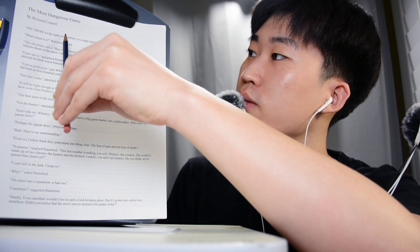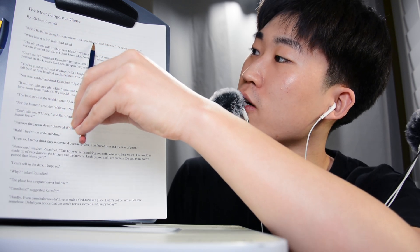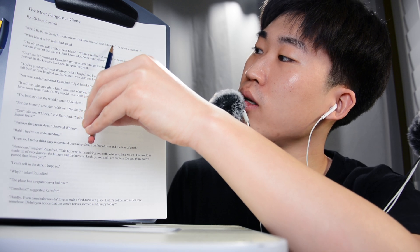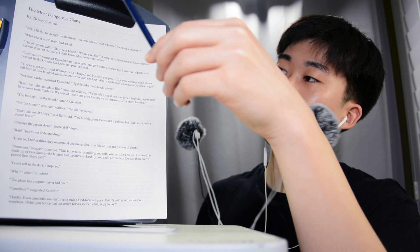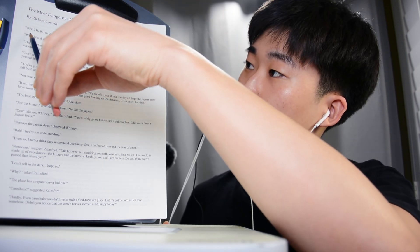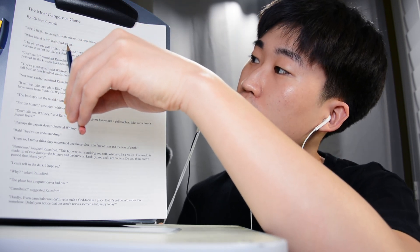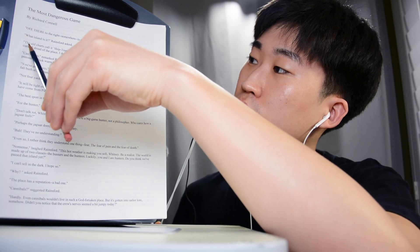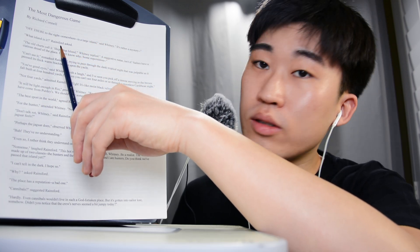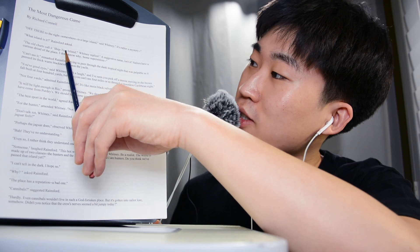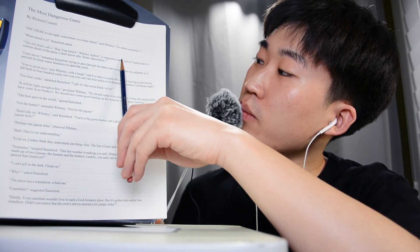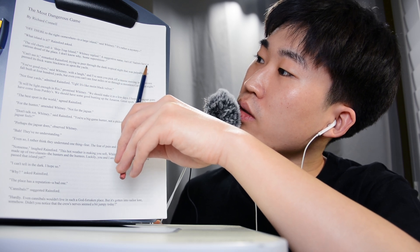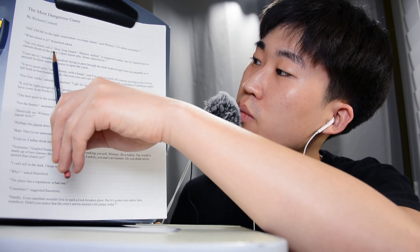Off there, to the right, somewhere is a large island, said Whitney. It's rather a mystery. What island is it? Rainsford asked. The Old Charts call it Ship Trap Island, Whitney replied. A suggestive name, isn't it? Sailors have a curious dread of the place.